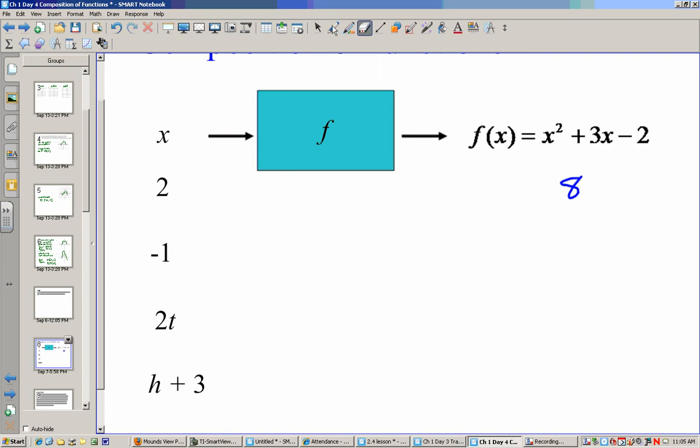Now if I put a negative 1 through the same situation, negative 1 squared is 1. That would be minus 3 minus 2, so that would give us negative 4.